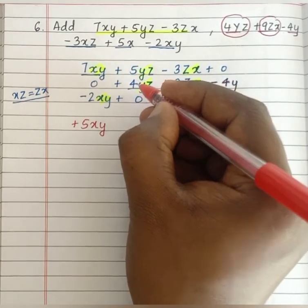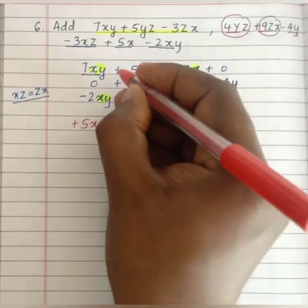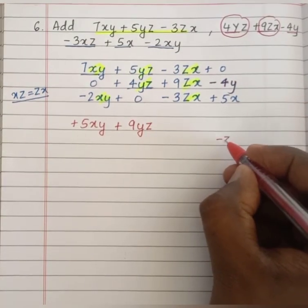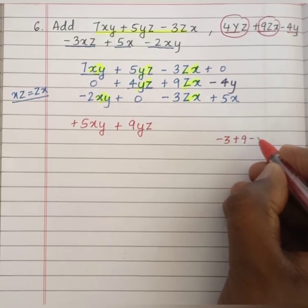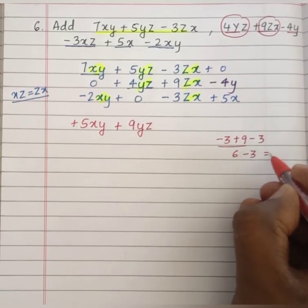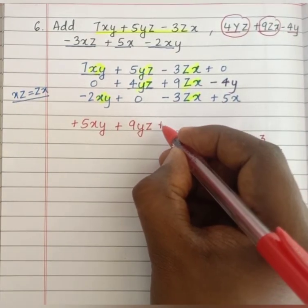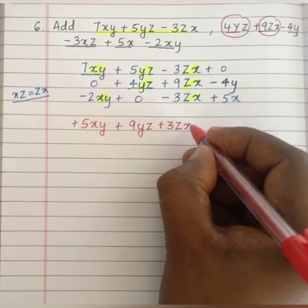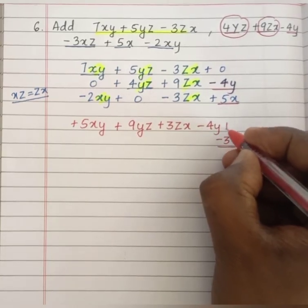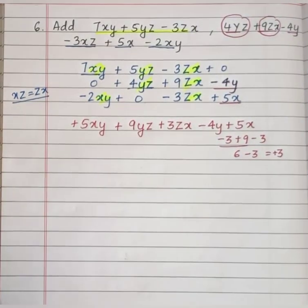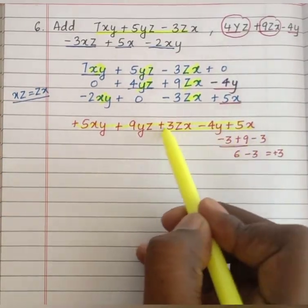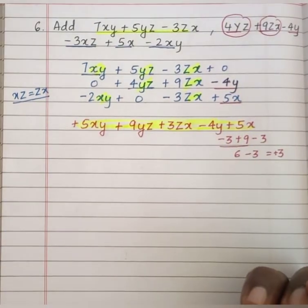Insert 0 wherever terms are missing, then add all the like terms. 7xy minus 2xy gives 5xy. 5yz plus 4yz gives 9yz. For the zx terms: minus 3 plus 9 minus 3 gives 3, so we get plus 3zx. The remaining unlike terms minus 4y and 5x are written as they are. Be careful while solving these kinds of problems — first arrange the terms so they become like terms.